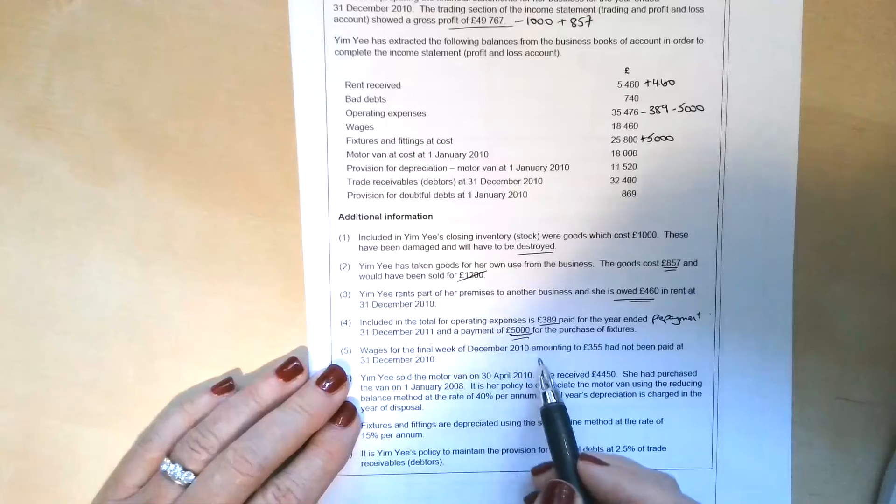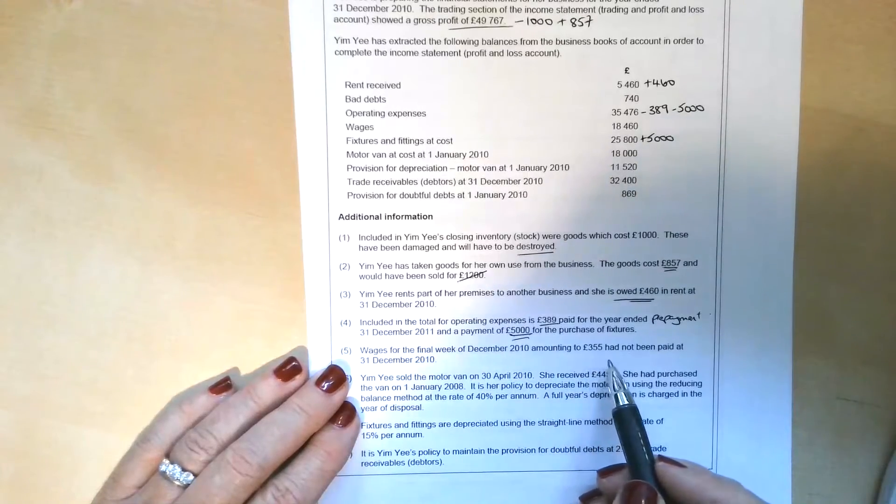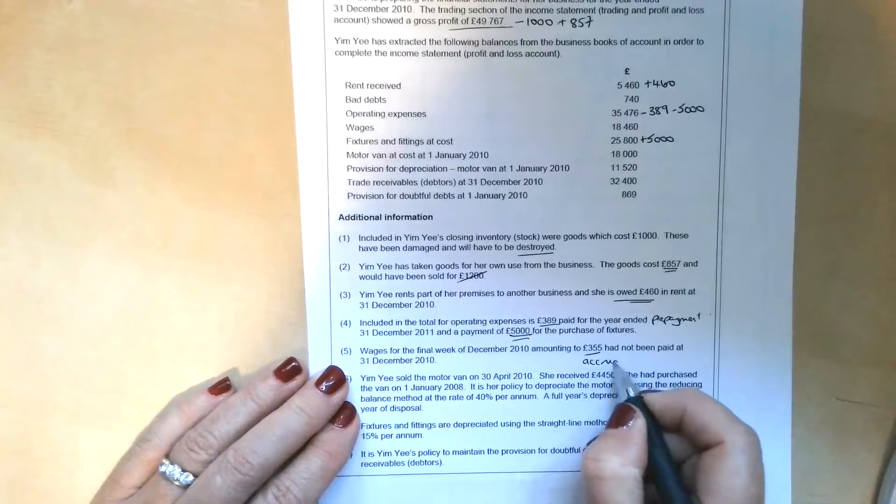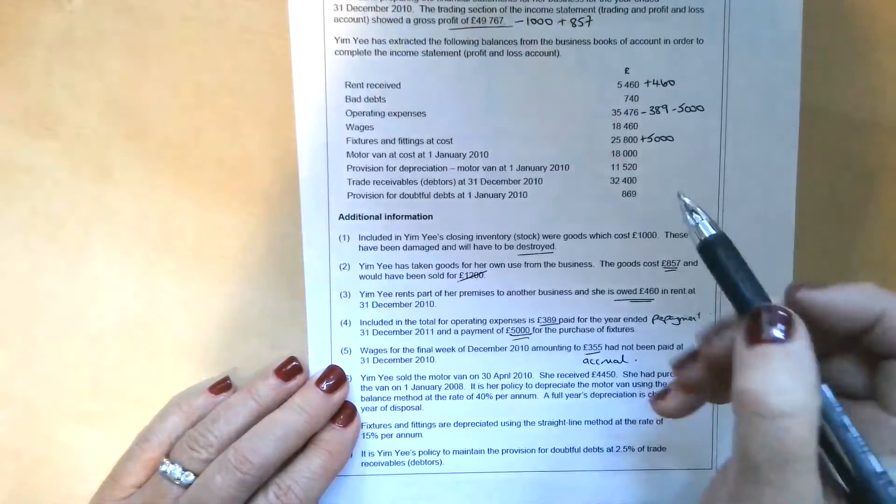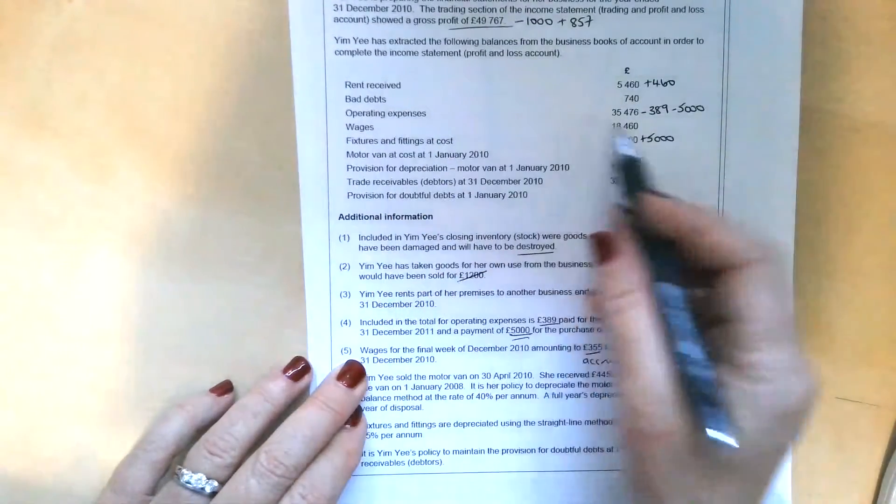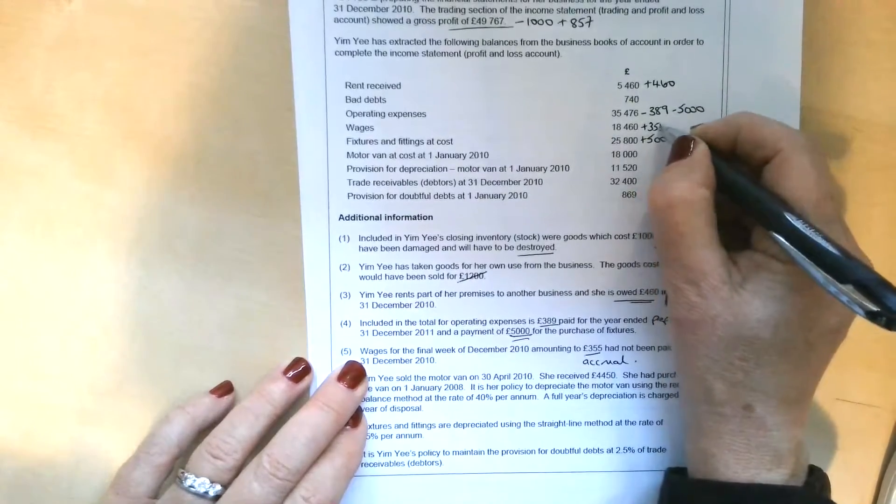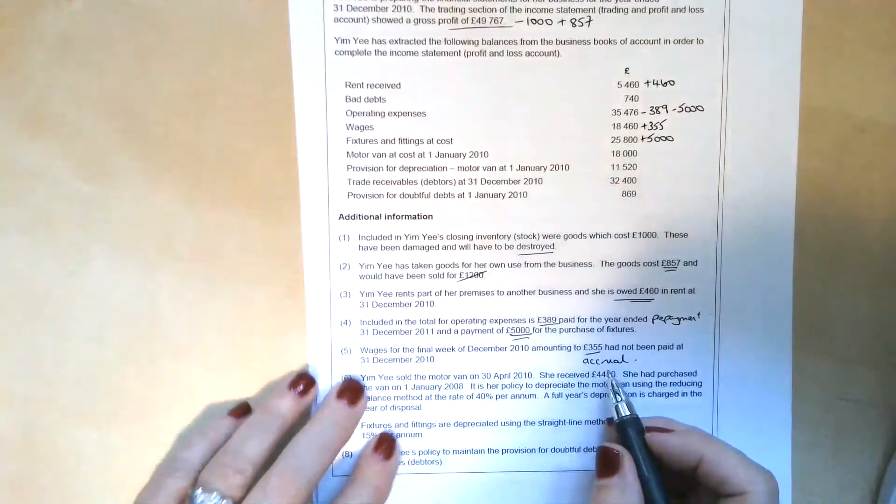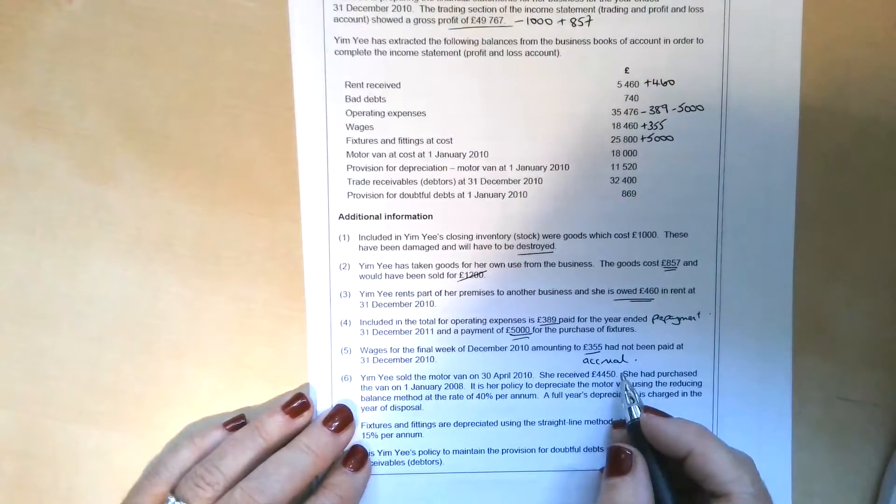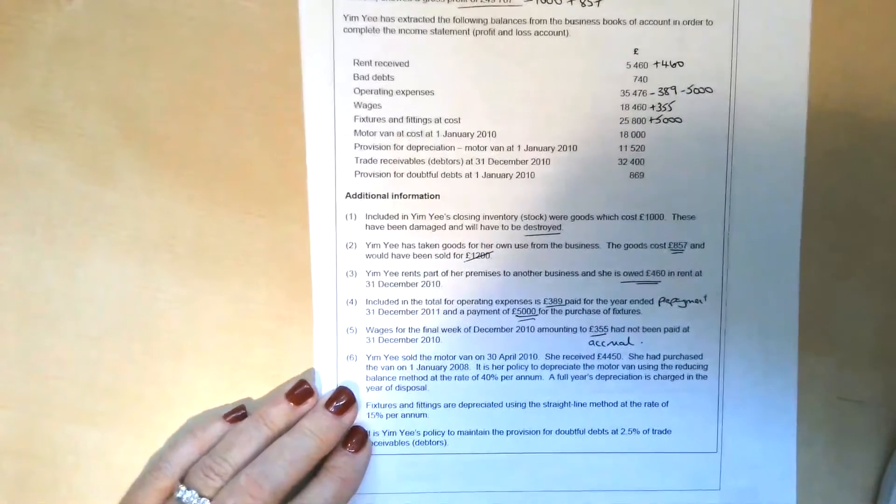Wages for the final week of December 2010 amounting to £355 had not been paid. So that's an accrual. We're going to need to add that to the expense. So if we find the wages expense up here, we're going to add the accrual of £355 there. And we would include that as a current liability on the statement of financial position.